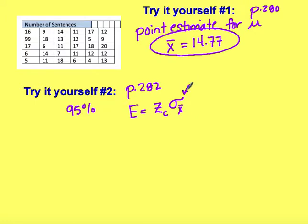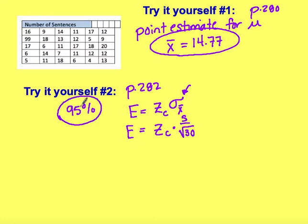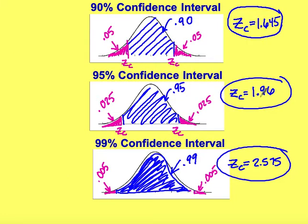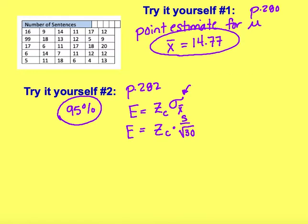If we do not have the population standard deviation, we can replace it with our sample standard deviation, and we divide that by the square root of 30, which is our sample size. For the 95% confidence level using those charts, the critical value is 1.96. So we're going to use E equals 1.96 times the standard deviation divided by the square root of 30.